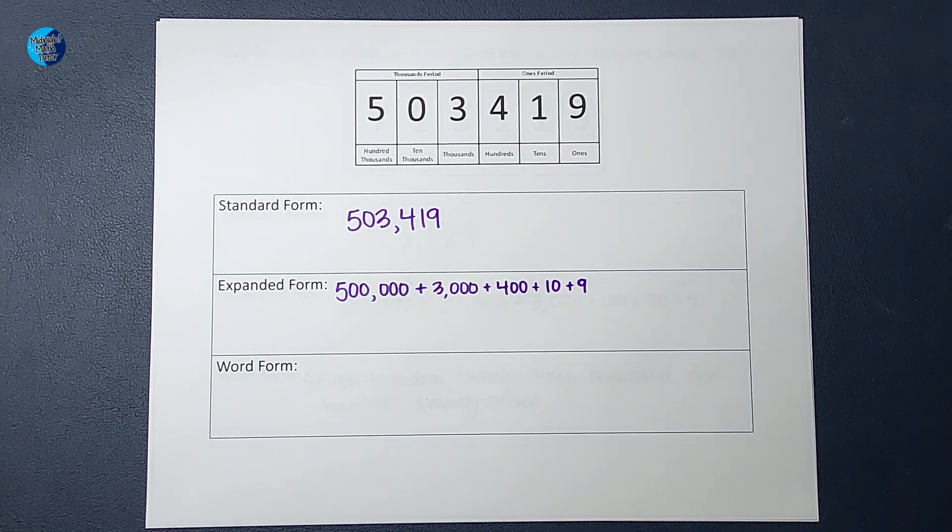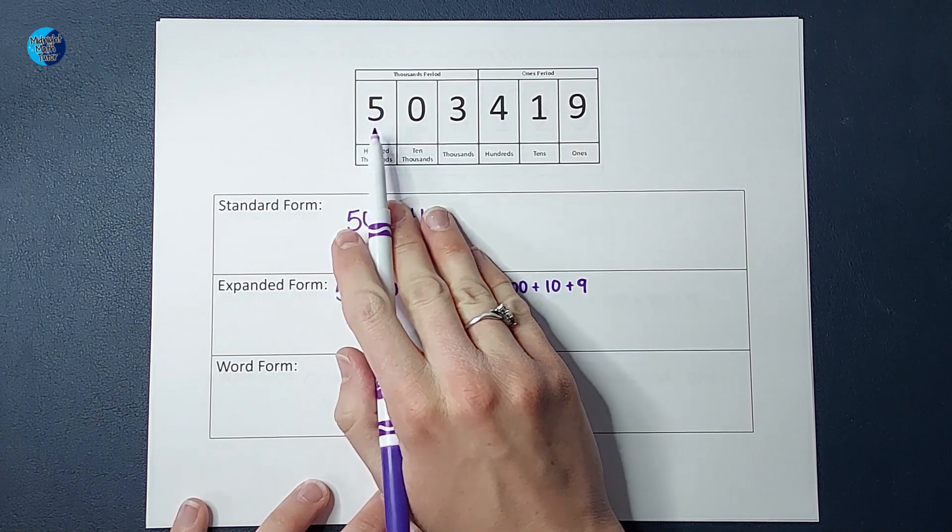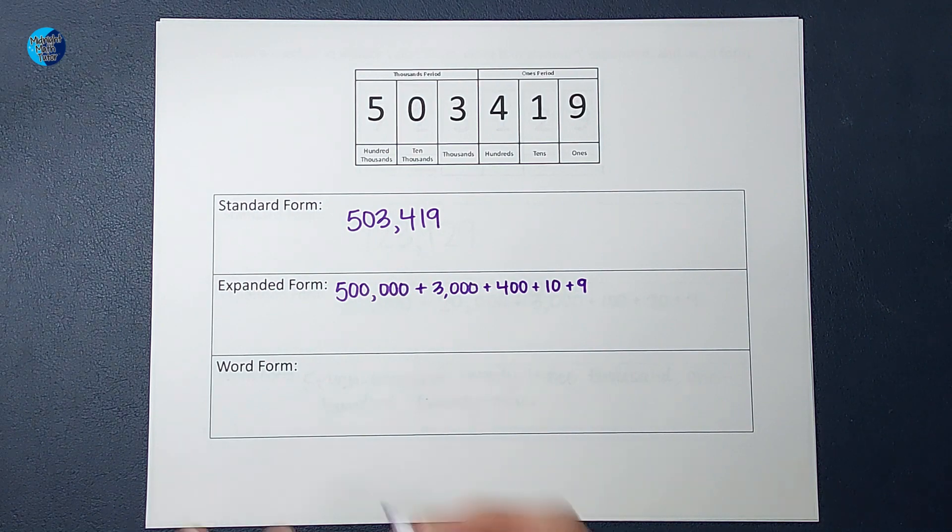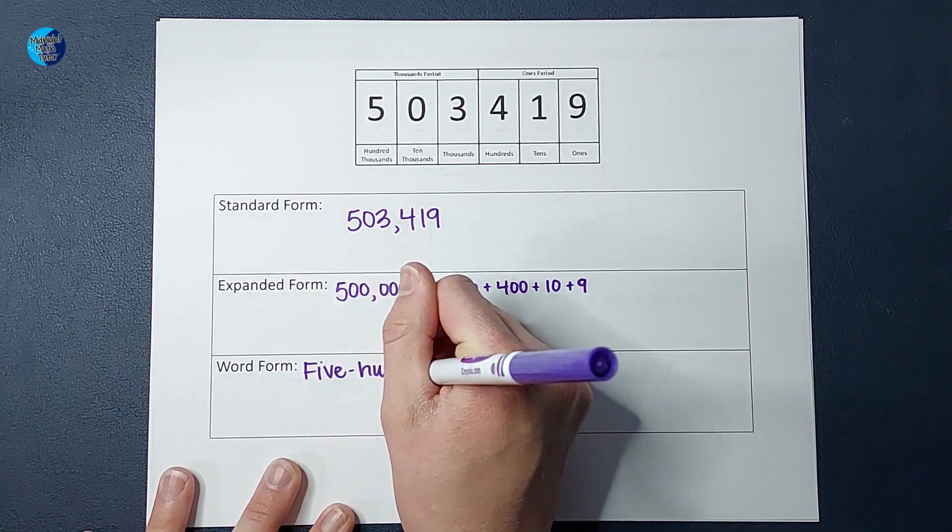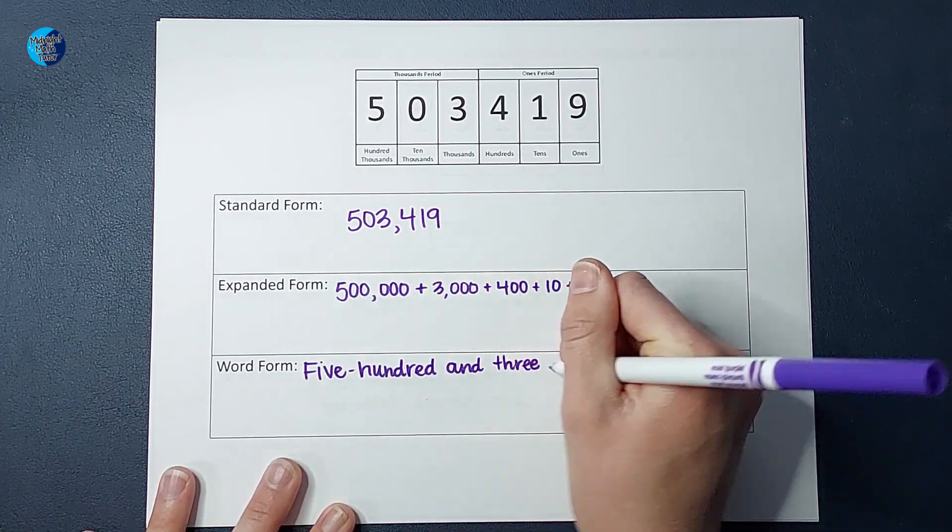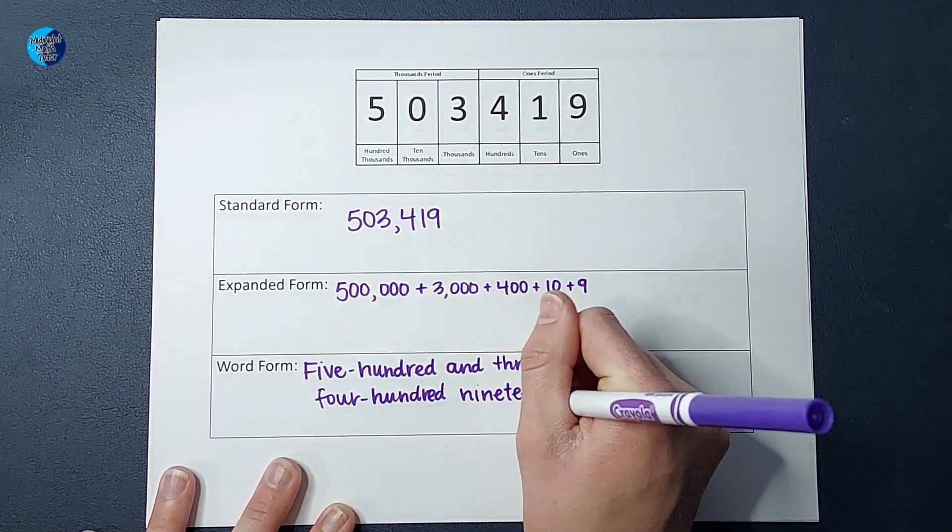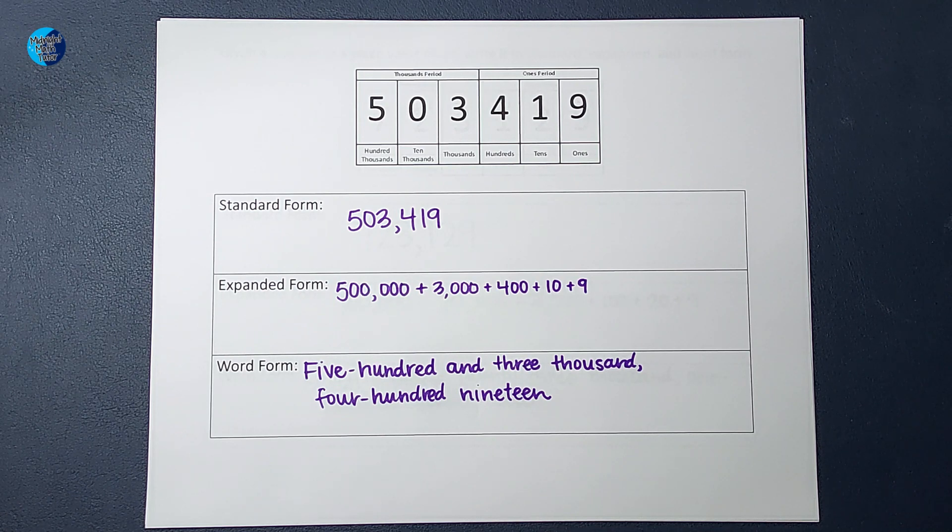Now, for word form, we are going to write five hundred three thousand, four hundred nineteen. So, there is my word form of that number.